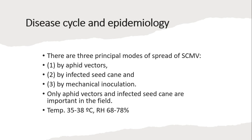Of these, only aphid vectors and infected seed canes are important in the field — these two are the most important spread modes. Favorable conditions for disease spread are a temperature of 35 to 38 degrees centigrade and a relative humidity of 68 to 78%.